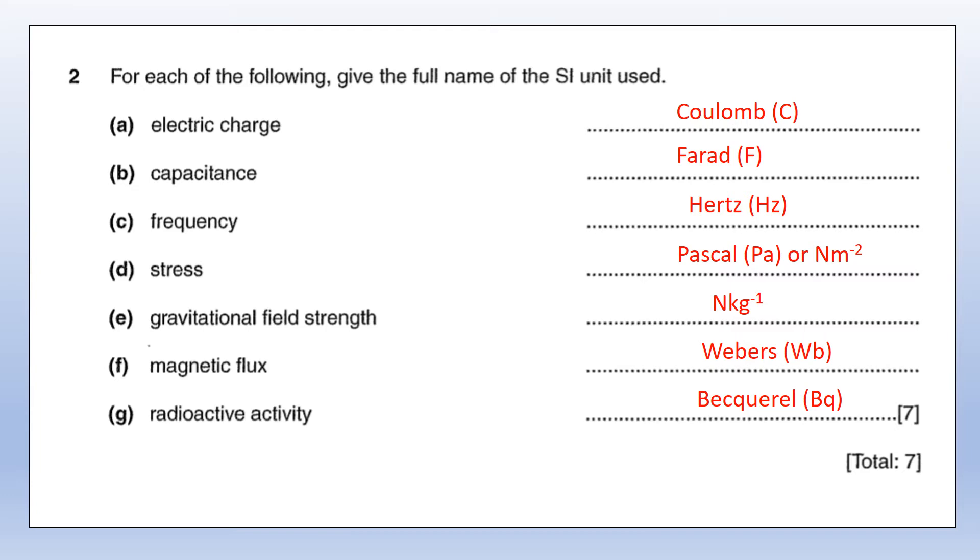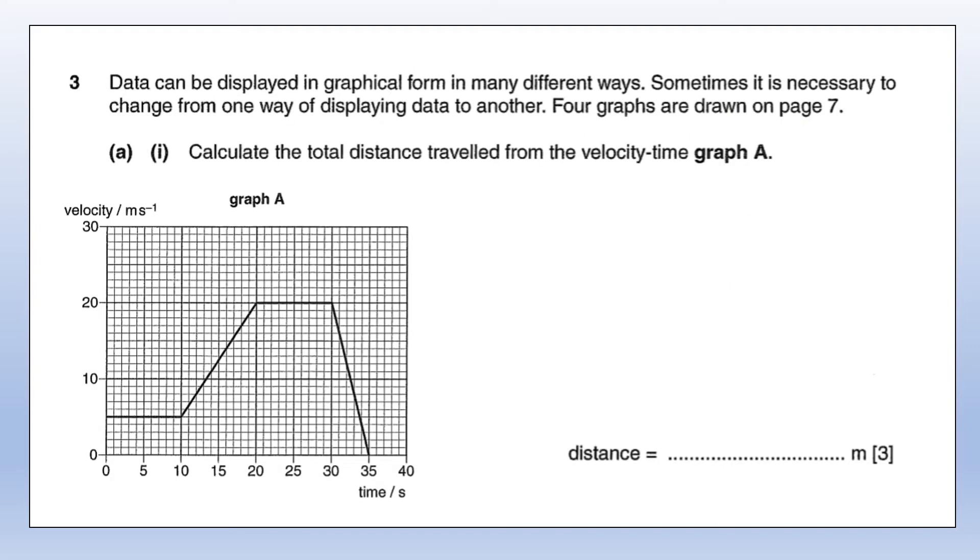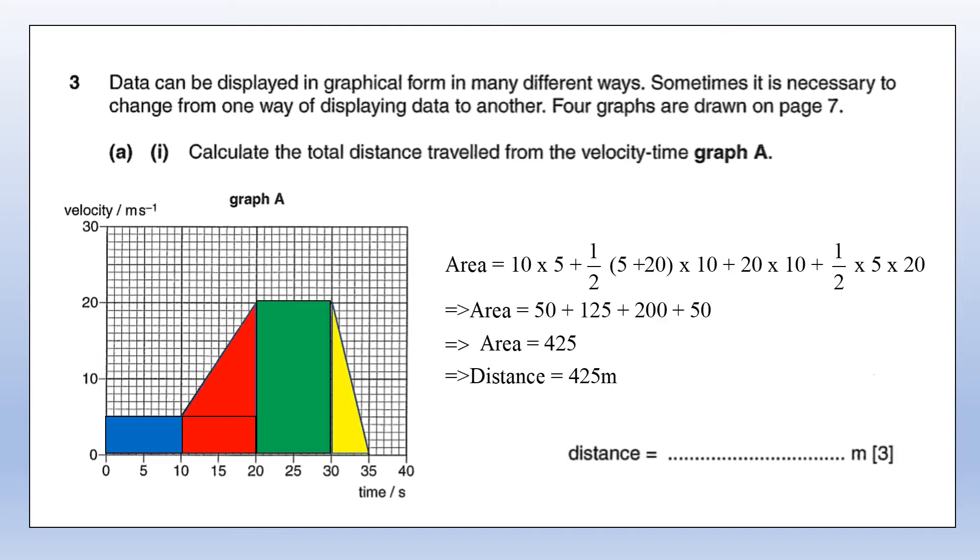Now we're going to have a look at some graphical analysis. We're going to start with a velocity versus time graph and we want to calculate the distance traveled from this graph. The distance traveled is the area under a graph like this. I'm going to divide it up into four shapes: a rectangle, a trapezium, a rectangle, and a triangle. I'm going to calculate the area of each of those individual shapes and then add those up, giving us the total distance, which in this case comes out as 425 meters.